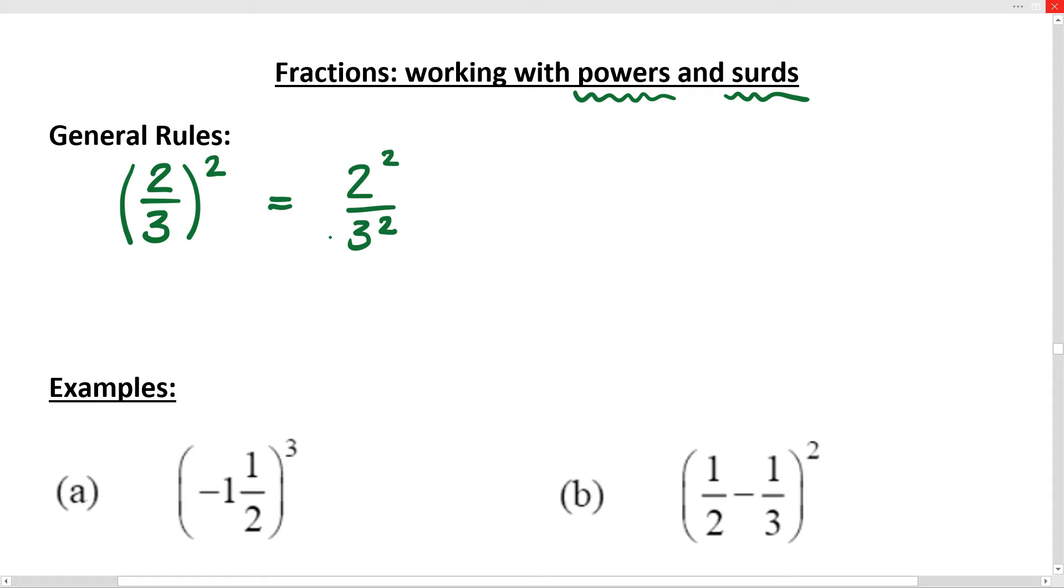What about a power of 3? Let's make it 3 over 2, and it was to the power of 3. Well you guessed it. That's going to be 3 to the 3 over 2 to the 3. These guys can be simplified, that would be 4 over 9 and this one would be 27 over 8.